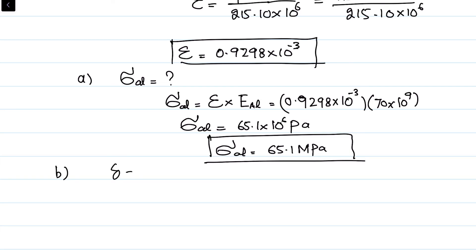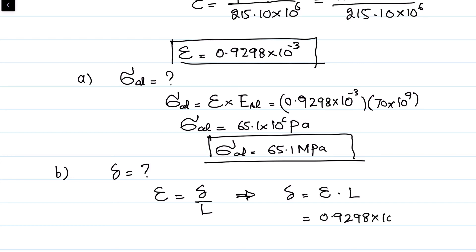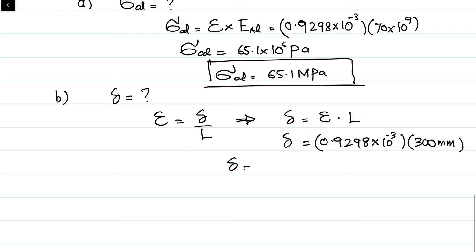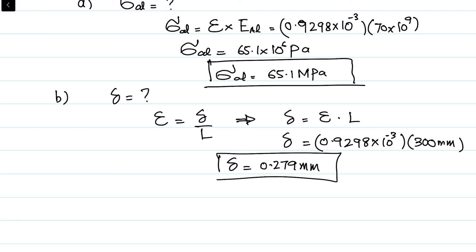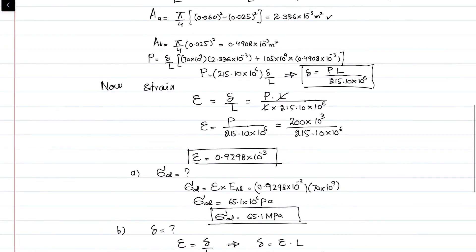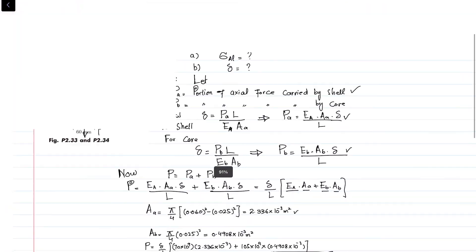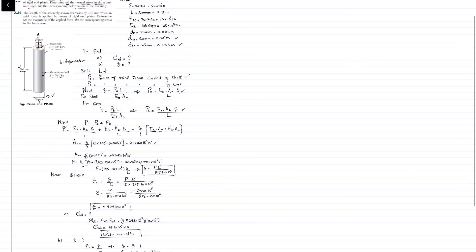For part (b), the total deformation: deformation = strain × length = 0.9298 × 10⁻³ × 300 millimeter = 0.279 millimeter. This is the answer to part (b). I hope you enjoyed this video and learned from it. If you have any questions, you can ask in the comment section. Thank you for watching.